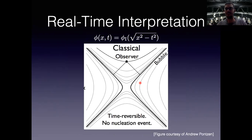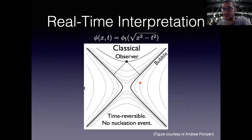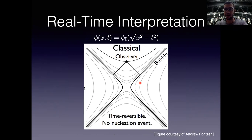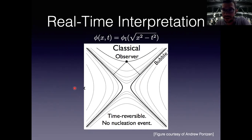To know what bubbles look like we need a real-time description. The obvious thing is to analytically continue the bounce solution back, but doing so reveals it doesn't describe nucleation of a bubble — it describes an infinitely large bubble contracting, hitting a minimum turnaround radius, and re-expanding. To restore time dependence, one ad hoc cuts this bubble along a time axis.